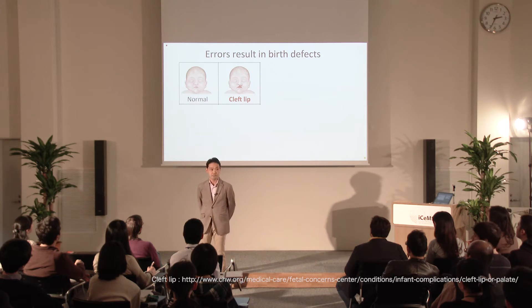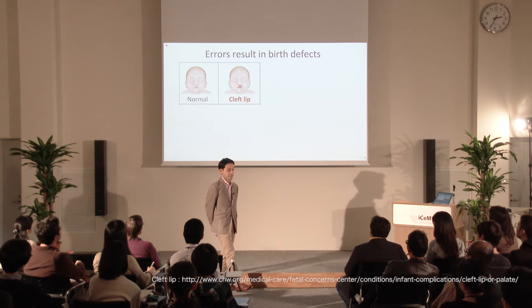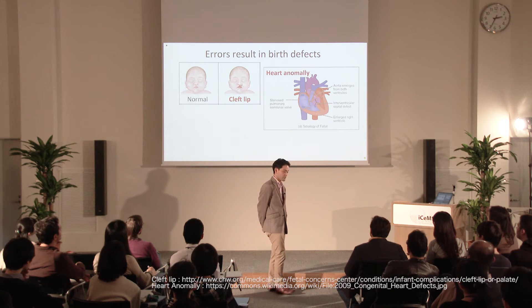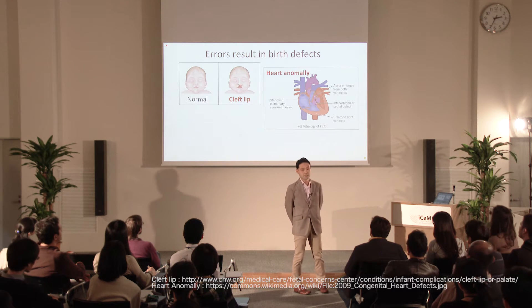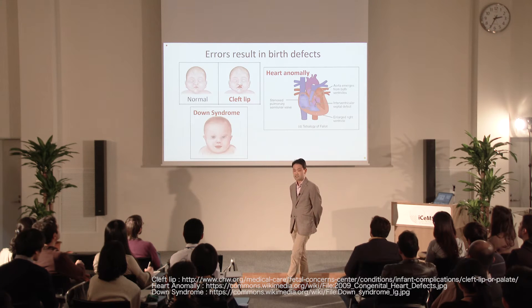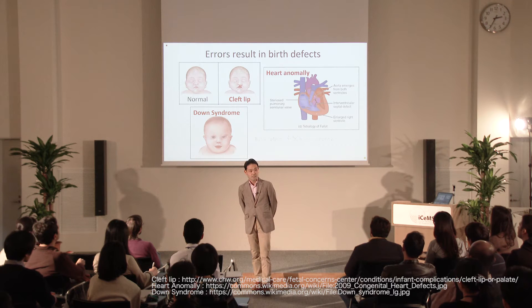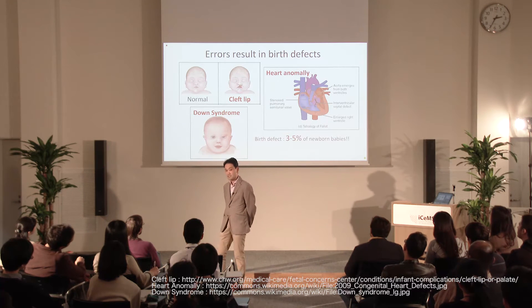Isn't it amazing that this complex process occurs without mistakes? Actually, we do sometimes make mistakes, and these mistakes cause birth defects. The major birth defects include cleft lip or cleft palate, which is the defect in fusion of the facial structure in the midline. Others include heart anomalies — defects in the formation of cardiac chambers or tube connections — and Down syndrome, caused by having abnormal chromosome numbers. These birth defects are seen in around 3–5% of all newborn babies, which is quite a lot.